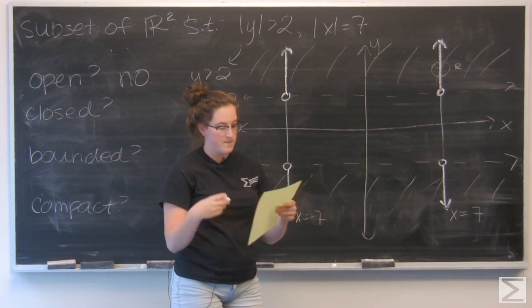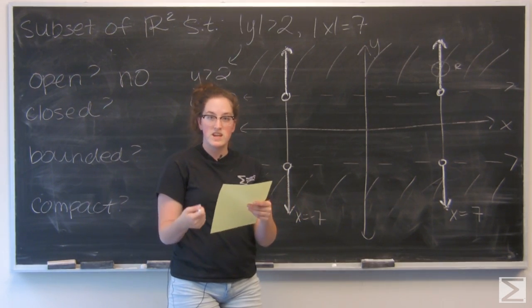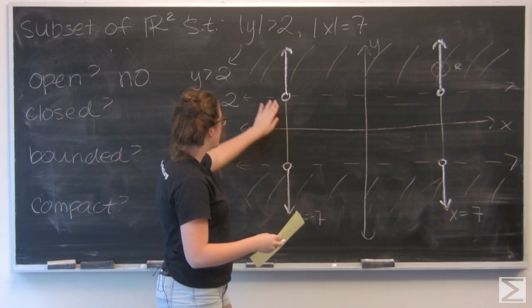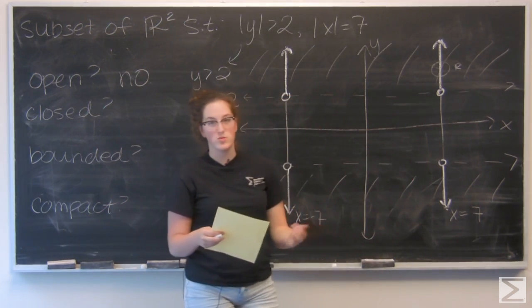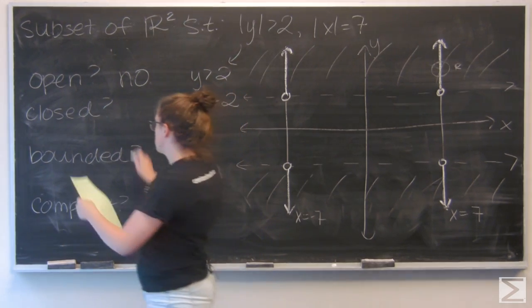Now let's look at closed. A closed set is one that contains its boundary points. Since I have these open circles right here as bounds, I know they don't contain their boundary points. So this set is not going to be closed.